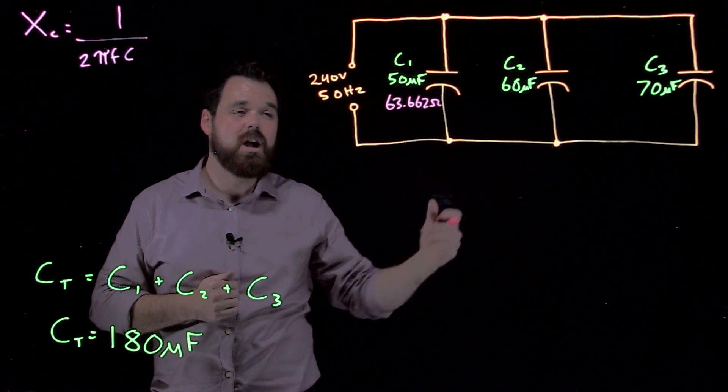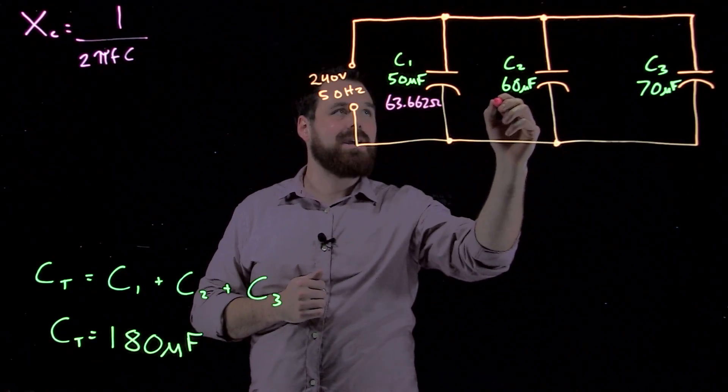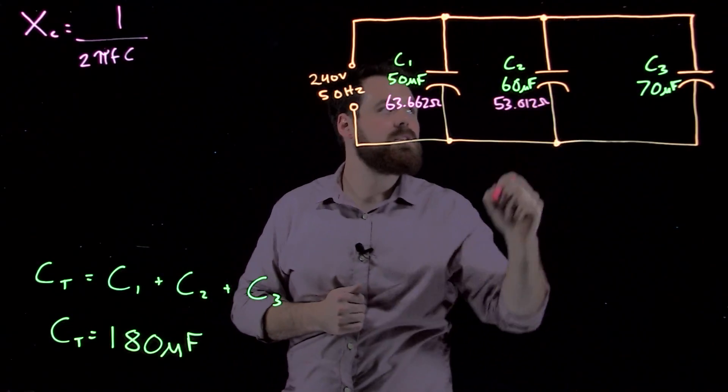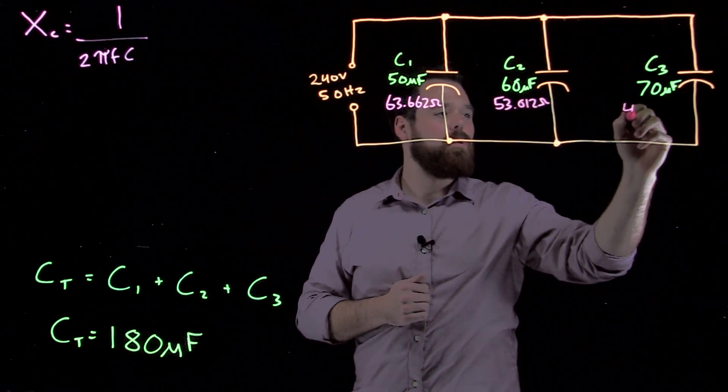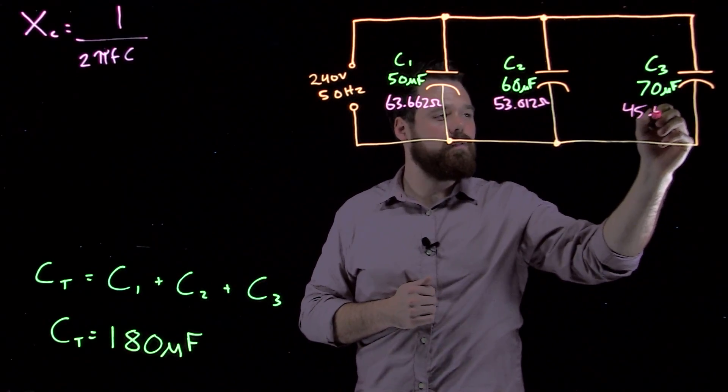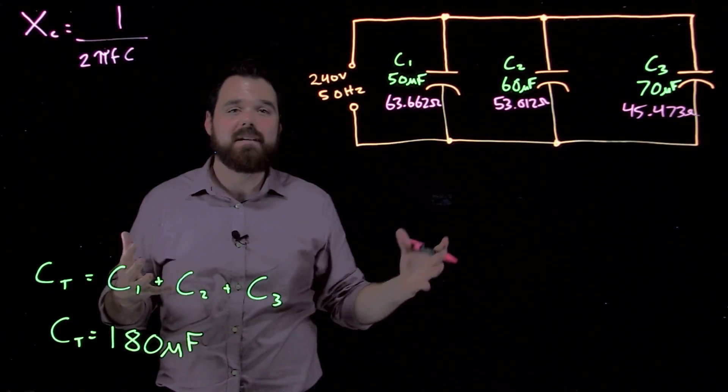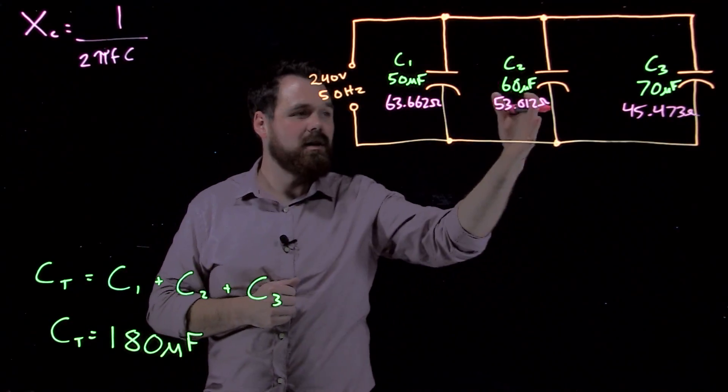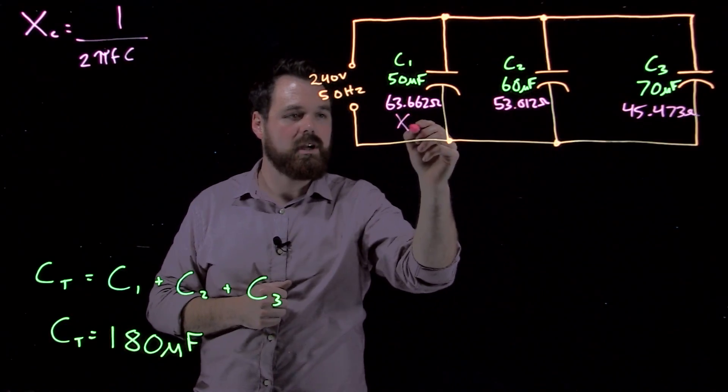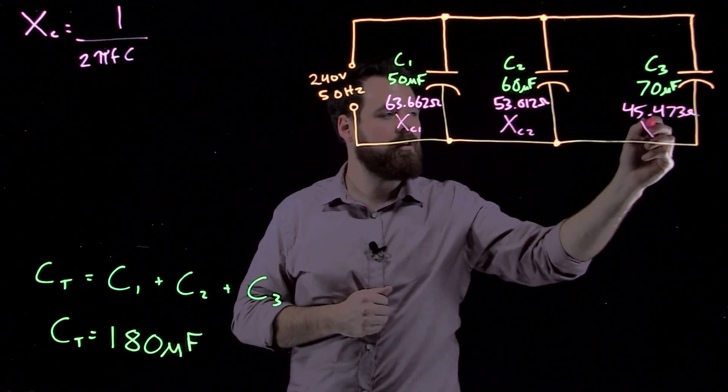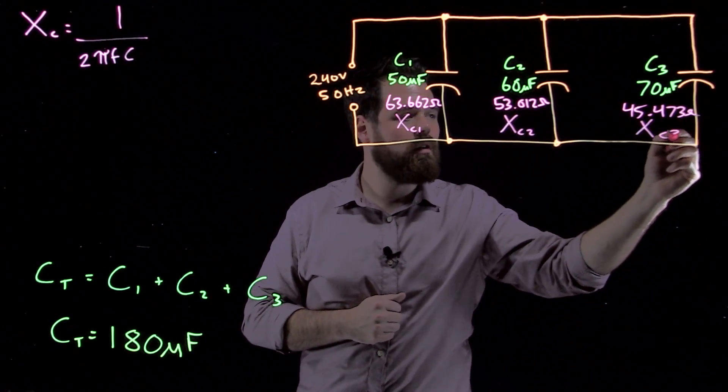We keep going down the line. We do the same thing. We get 53.012 Ohms and 45.473 Ohms. So we can do that in each branch. Figure out XC1, XC2. This would be XC1, XC2, and XC3.